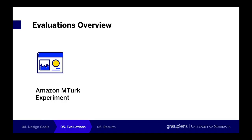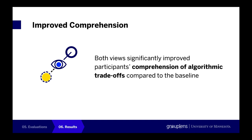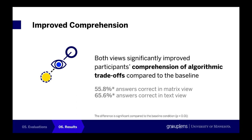To understand whether our method actually helps people better comprehend and navigate the trade-offs, we conducted an online experiment with Amazon Mechanical Turk and an interview study with domain experts. From our Mechanical Turk study, we found that both our interfaces improved participants' comprehension of algorithmic trade-offs. With the matrix view, participants got 56% of answers correctly for questions on algorithmic trade-offs, and with the text view, participants got 66% of the answers correctly. Both differences were significant compared to the condition without using any interactive interface.